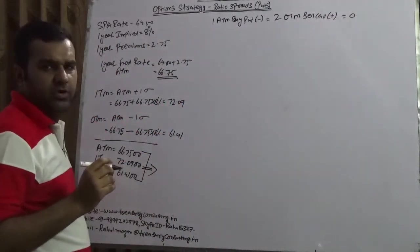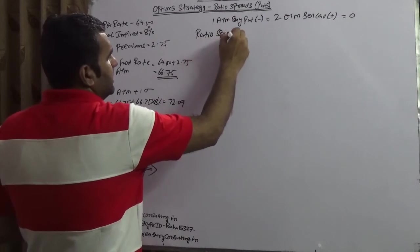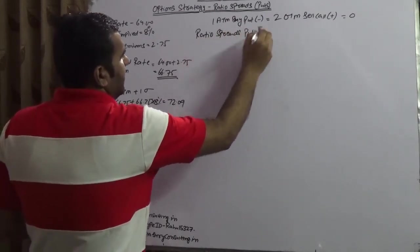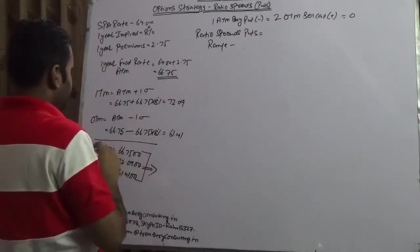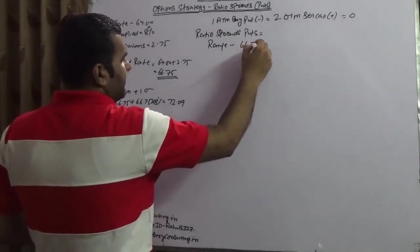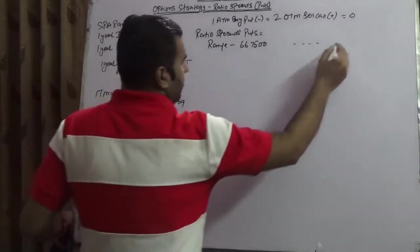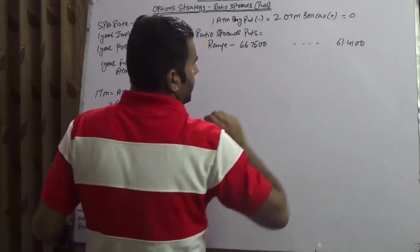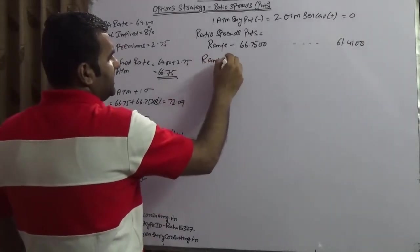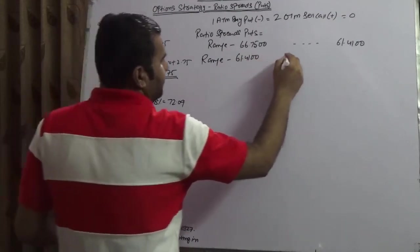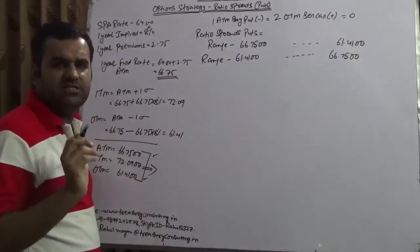So in that sense, what would we be doing? We are creating ratio spreads puts whereby the range would be at the money to out of the money. 66.75 and out of the money is 61.41. This is the range which we have created. You can take it either way also.